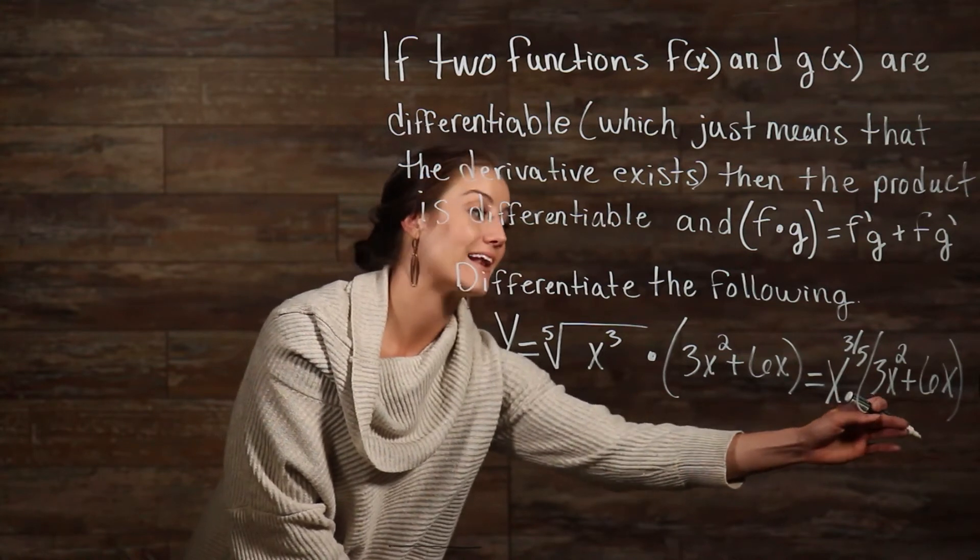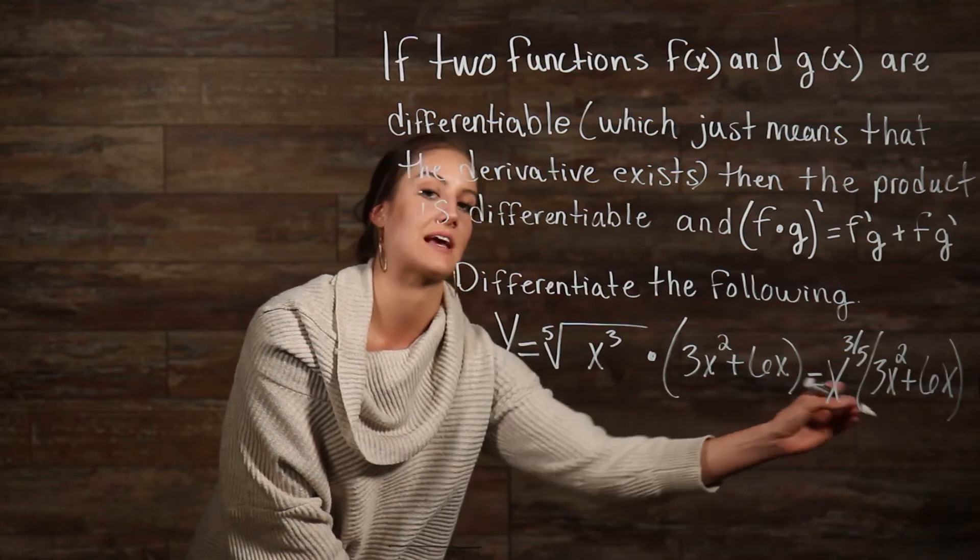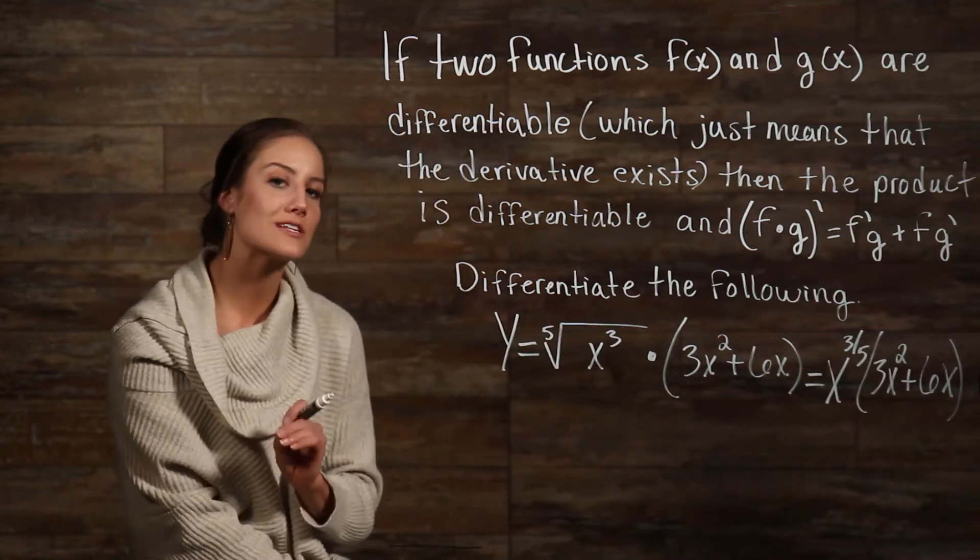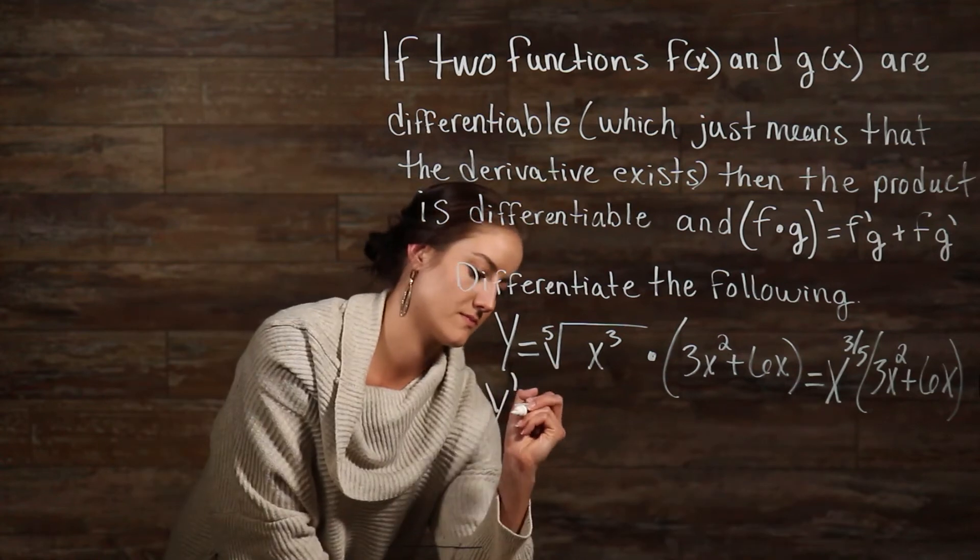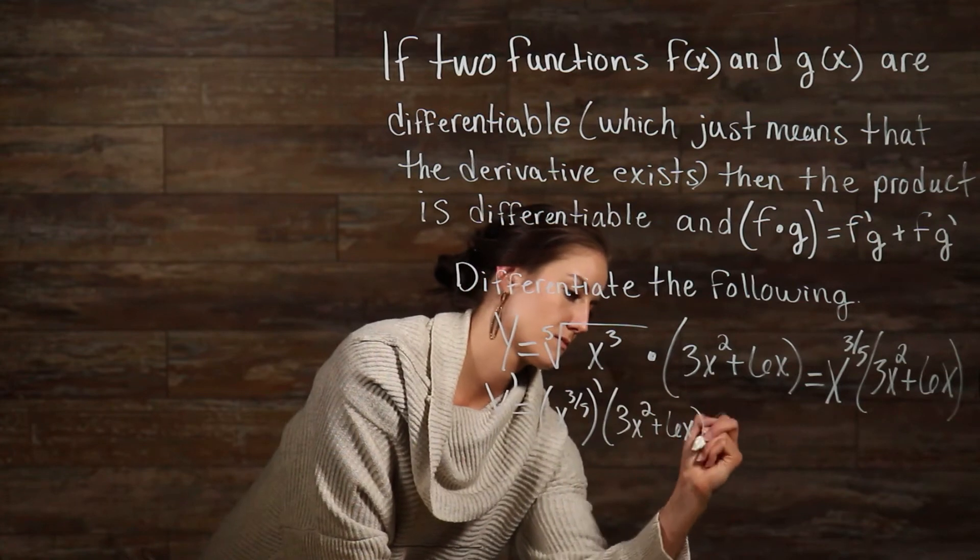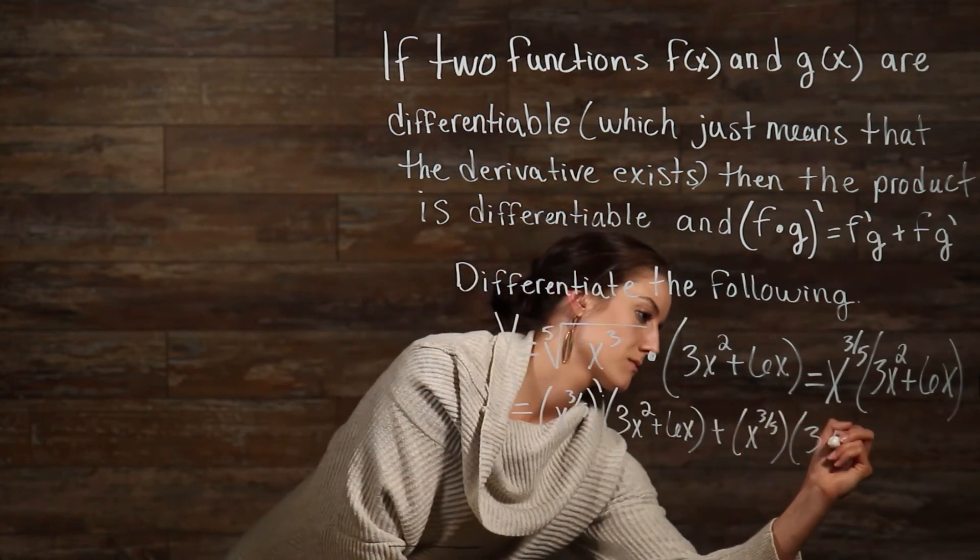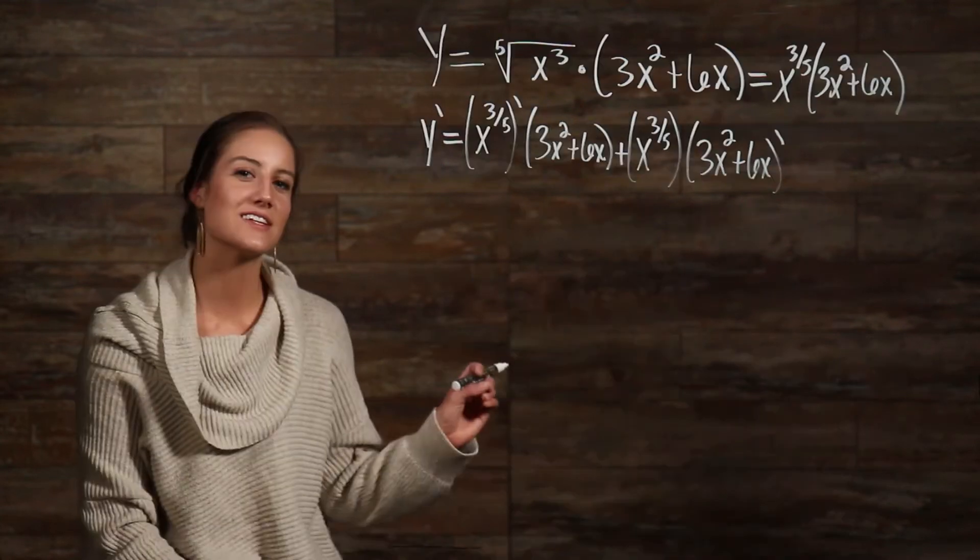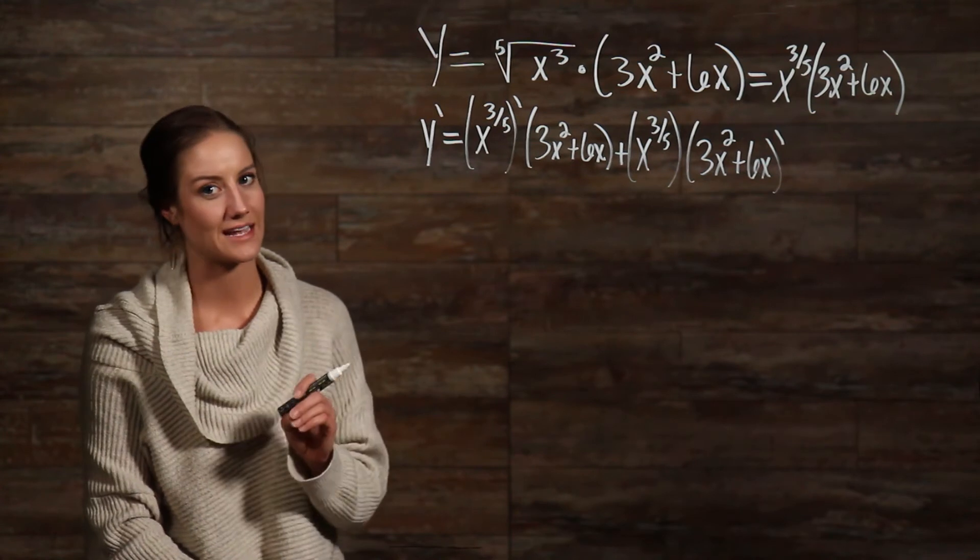Then, we're going to add the first part of our function left alone times the derivative of the second part of our function. Alright, so let's go ahead and do what the product rule is telling us to do. We need to take the derivative where it says to take the derivative, then multiply the two functions together.